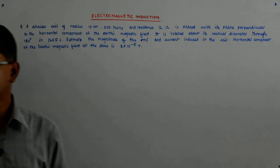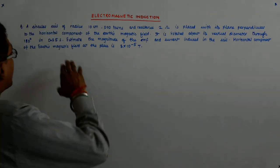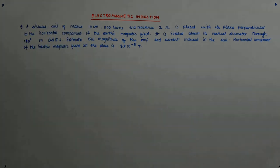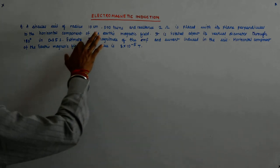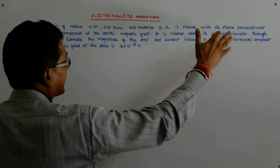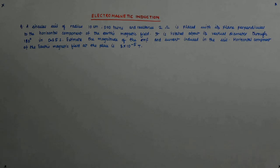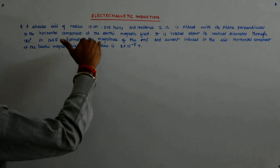Now let us try to solve this question which says there is a circular coil of radius 10 centimeters, 500 turns, resistance 2 ohm, placed with its plane perpendicular to the horizontal component of the earth's magnetic field.